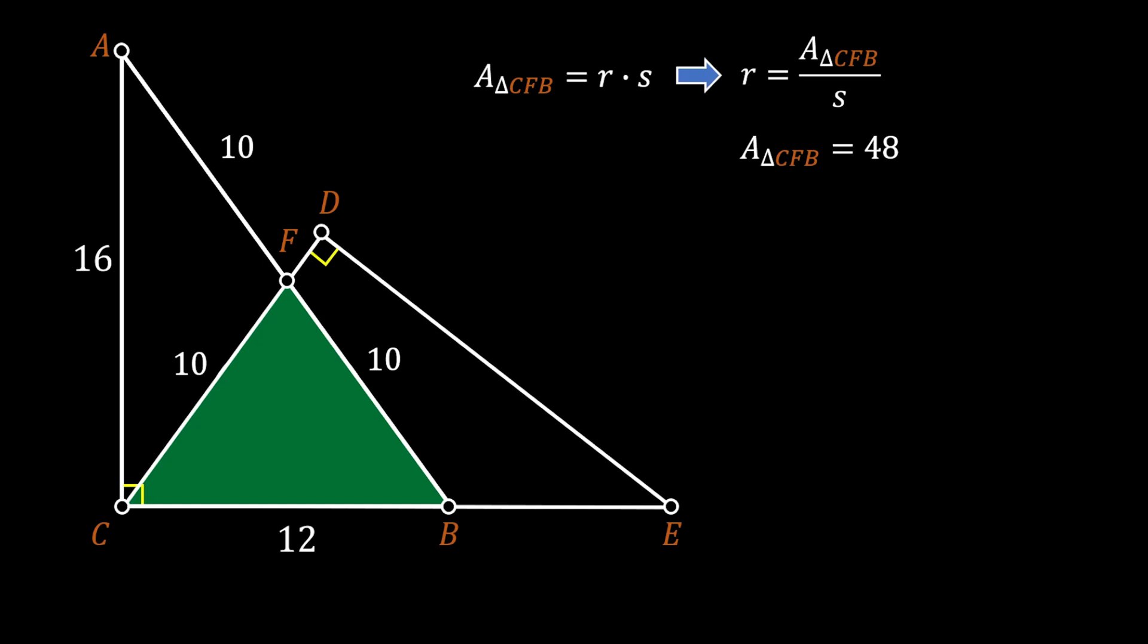We can find the semiperimeter of the triangle by dividing the sum of all of its sides by 2. In our case, this is sides 10, 10 and 12. So, we will get that that is 32 over 2. That means that the semiperimeter of our triangle is equal to 16.